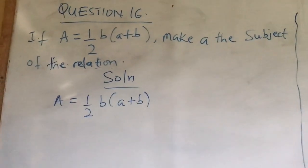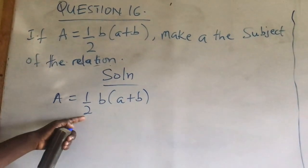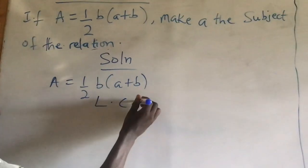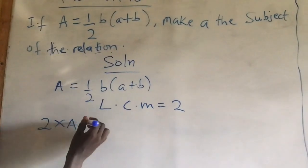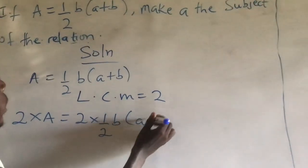The first thing you are supposed to do is that you should eliminate this fraction. And to eliminate the fraction, you multiply through by the LCM. So the LCM is 2. It becomes 2 times A is equal to 2 times half B, A plus B.